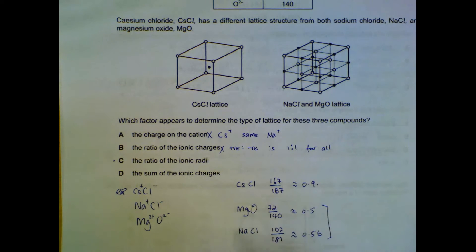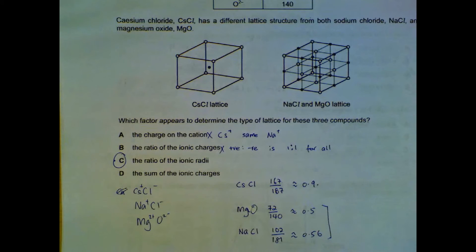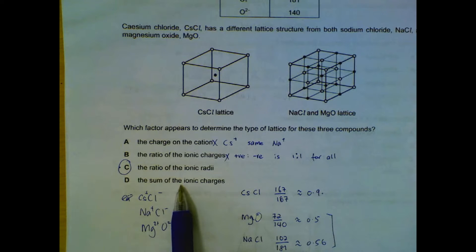We can see that sodium chloride and magnesium oxide are pretty close as compared to cesium chloride, so this could be a reason why these two have the same structure, whereas cesium chloride has a different structure from the other two. Sum of the ionic charges: if the sum of the ionic charges determine the lattice, then again cesium chloride and sodium chloride we expect them to be the same lattice. In this case it's not.